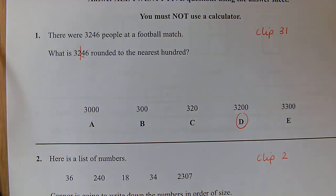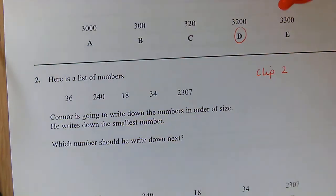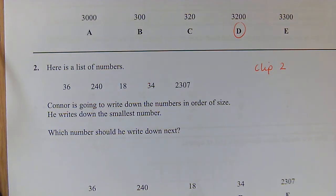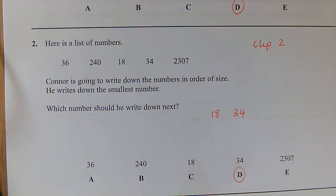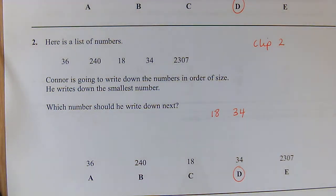Question 2: Connor's going to write down the numbers in order of size. He writes down the smallest number first. Which is the next number he should write down? So the smallest number is 18, the next number along would be 34. With this one, really important you read the question carefully. It's not asking for the smallest, it's asking for the next one.